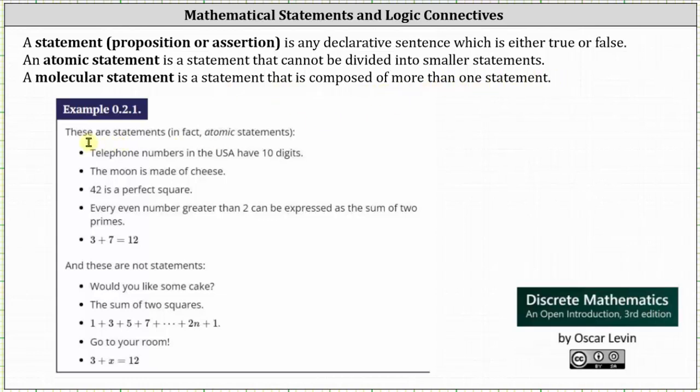Here are several examples of statements, more specifically atomic statements, because these statements cannot be divided into smaller statements. Telephone numbers in the US have 10 digits. The moon is made of cheese. 42 is a perfect square. Every even number greater than 2 can be expressed as the sum of 2 primes. 3 plus 7 equals 12.